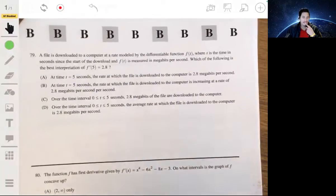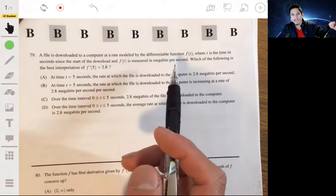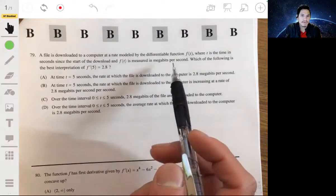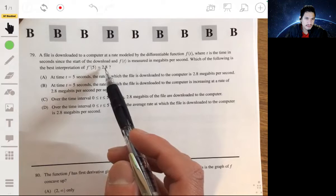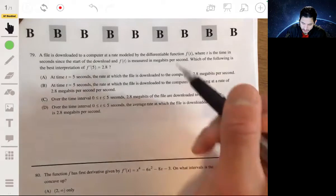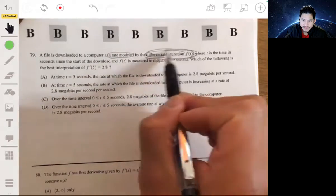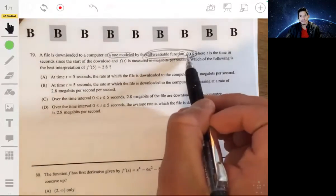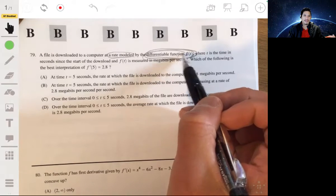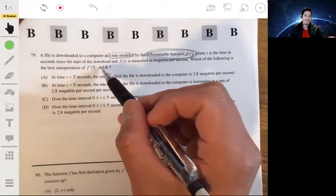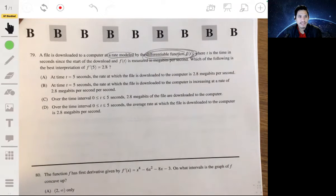It's 79. The file is downloaded to computer at a rate modeled by a differentiable function f of t, where t is the time in seconds since it started to download and f of t is measured in megabits per second. Which of the following is the best interpretation of f prime of 5 equals 2.8? Okay, so let's read this carefully because it says that the rate is modeled by this differentiable function. So the function f of t itself is a rate, or it's like a derivative you could say. Okay, so then if we're taking the derivative of f of t, we're basically taking the derivative of the derivative, or the rate of the rate. So we're going to be looking for a description that describes how the rate is changing at five seconds.